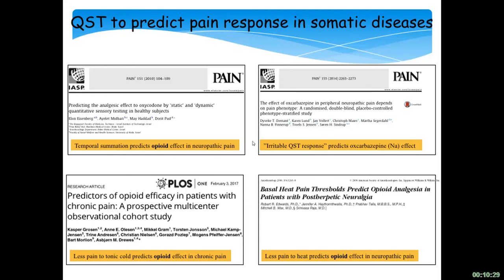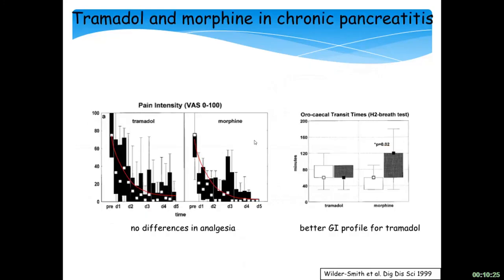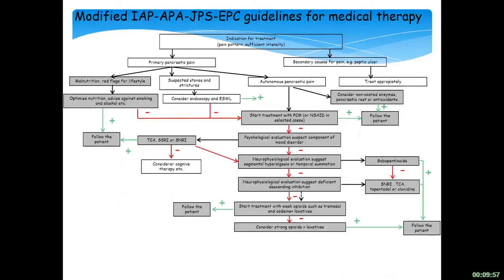What we typically do is try weak opioids — for example, tramadol — because it has been shown in chronic pancreatitis by Dr. Clyde Wilder-Smith that in equipotent doses, it has fewer side effects. One reason is that tramadol also works on SNRI and SSRI mechanisms and has peripheral effects. But still, it's an opioid. If it works, fine. If not, we move to stronger opioids. We try to avoid that, but in many patients — up to about 40% of those with pain — strong opioids are the only thing we can use.